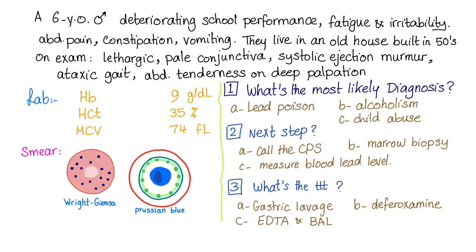Now let's work through a case. A six-year-old boy whose parents are complaining of deteriorating school performance. He is also tired, irritable, has abdominal pain and constipation, and sometimes vomits. They live in an old house built in the 1950s — and this is important.